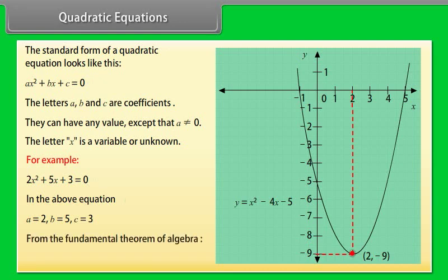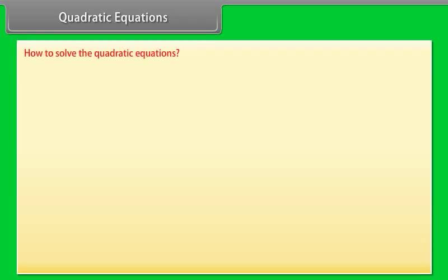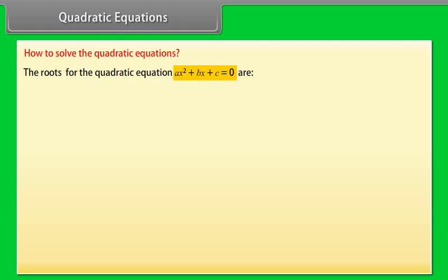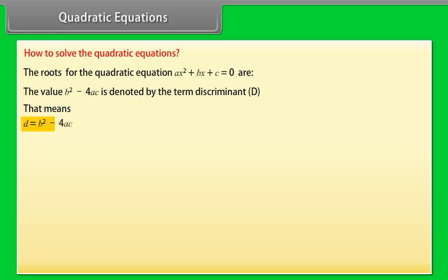From the fundamental theorem of algebra, we can deduce that the quadratic equation has two roots. The value B² − 4AC is denoted by the term discriminant D. That means D = B² − 4AC.